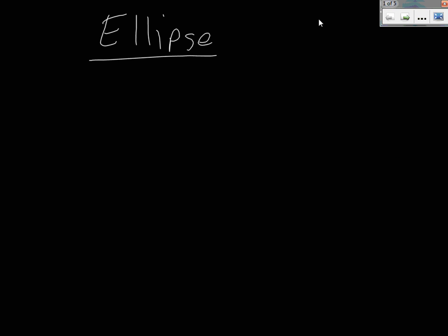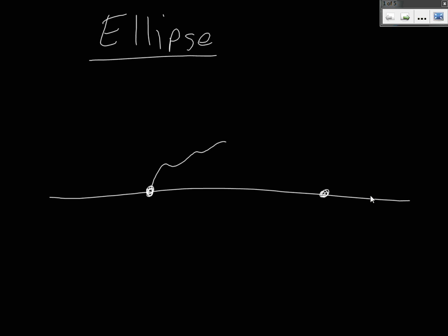We are now going to talk about the definition of an ellipse and then we will derive the formula. Suppose that you have a piece of string. You tie down one end of the string there and another end of the string there, and it is hanging out here. Now if you were to put your pen here and pull outward, you might get that configuration with the string.